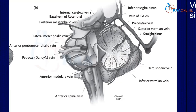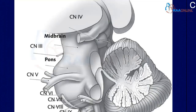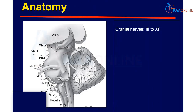The venous system includes the deep venous system including the internal cerebral veins, basal vein of Rosenthal, posterior mesencephalic vein, lateral mesencephalic vein, and mainly the confluence of sinuses which includes the transverse sinus and the sigmoid sinus. The cranial nerves from the third to the twelfth arise from the posterior cranial fossa.